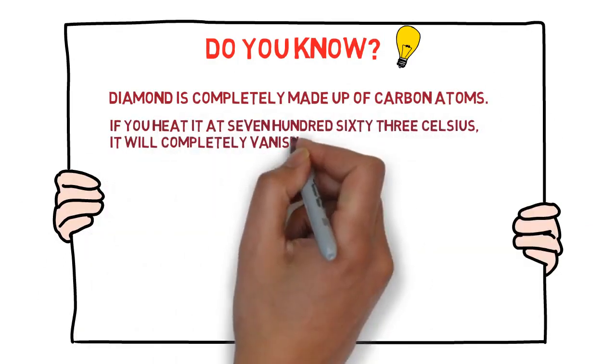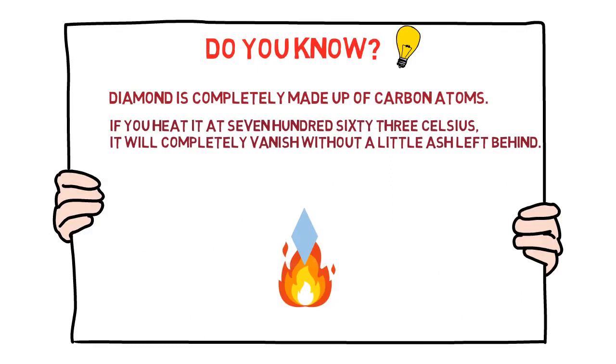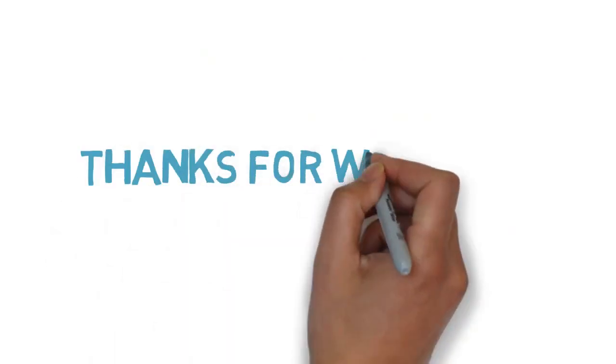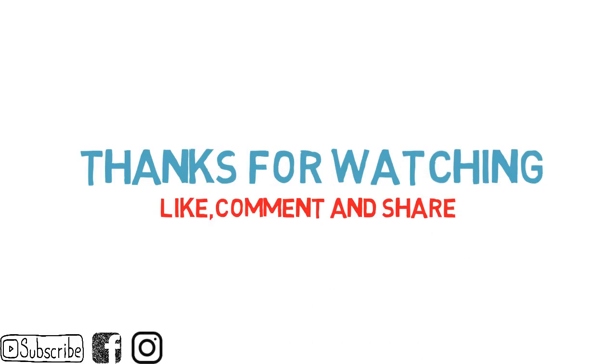Do you know? Diamond is completely made up of carbon atoms. If you heat it at 763 Celsius, it will completely vanish without a little ash left behind. Thanks for watching. Like, comment and share.